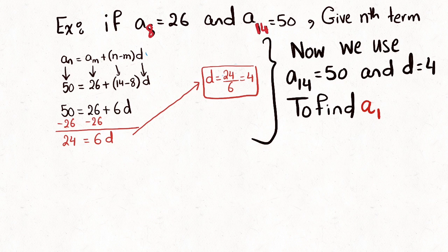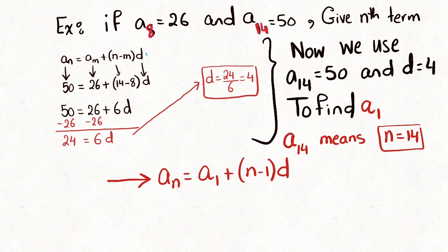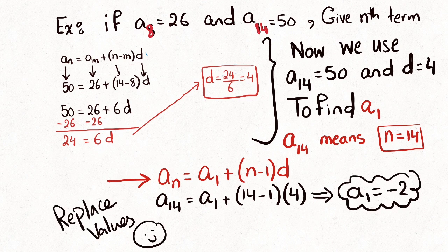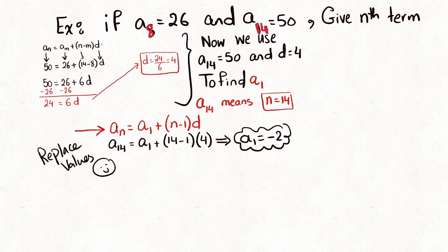Take one of the known terms — either a14 or a8. Using a14, recall the formula a_n = a1 + (n − 1) × d, apply all the values, solve the equation, and find the value of a1, which is negative 2.